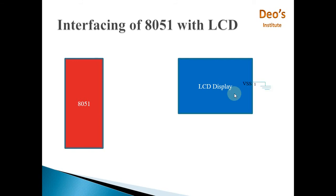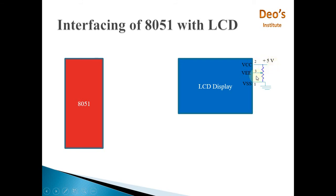The first pin on the LCD display is VSS. The VSS pin is connected to ground — that is for the power supply earthing connection. The second pin is VCC, which is connected to a +5V power supply.